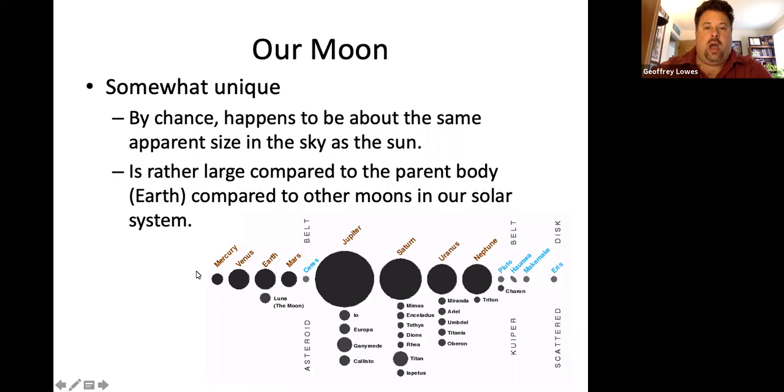Our moon is a little unique. By sheer chance, it happens to be about the same size in the sky as the sun. Now, the moon of course is much smaller than the sun, but the sun is also further away. And it just so happens that the relationship between what we call apparent size and distance is such that the moon and the sun are about the same size.